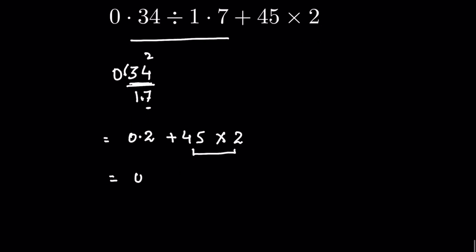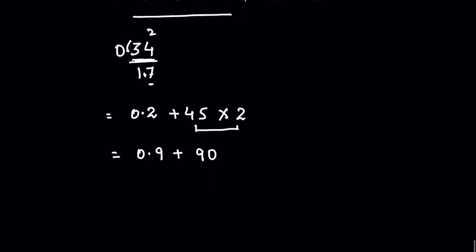So 0.2 plus 45 times 2 is 90. 90 plus 0.2 is 90.2. This is your answer.